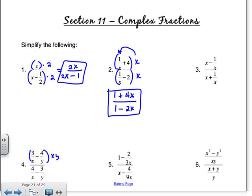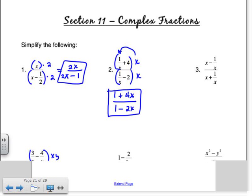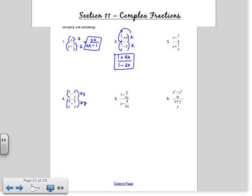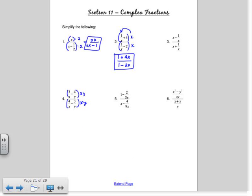Now some of these other ones are a little bit more difficult. Number 4, you would multiply by x times y, x times y. Number 5, I would multiply by 9x and 9x. Number 6 looks pretty tricky, so let's go ahead and try number 6.